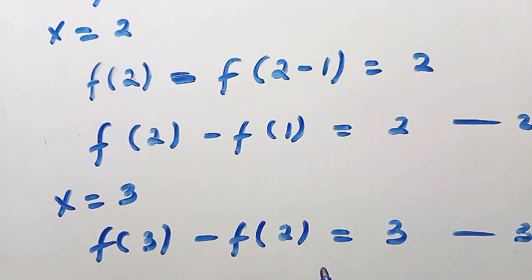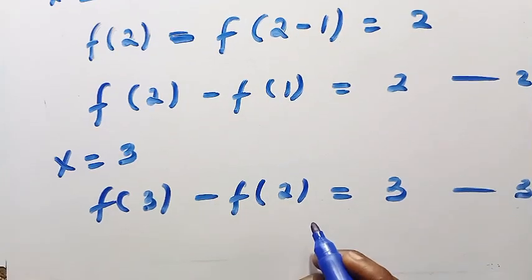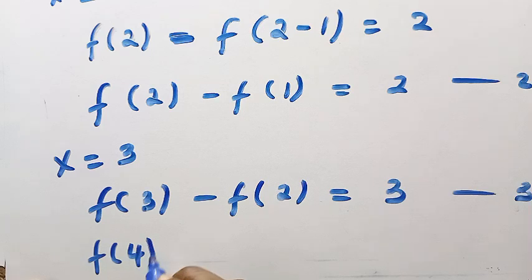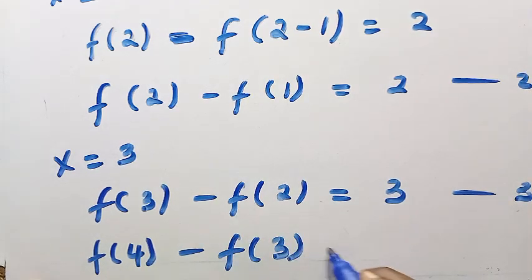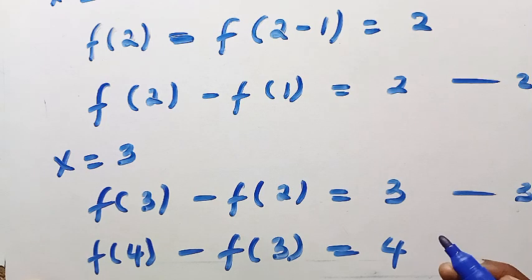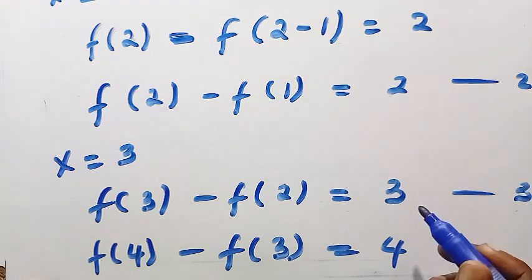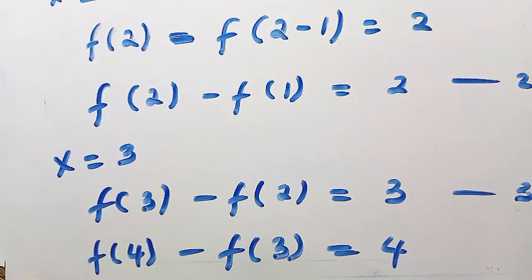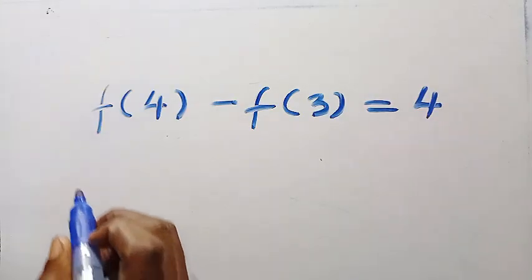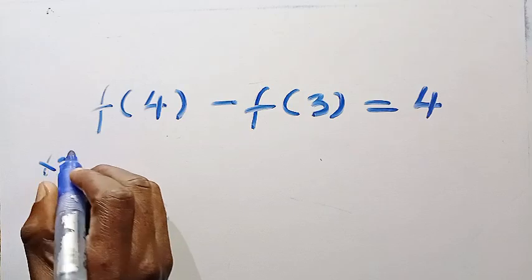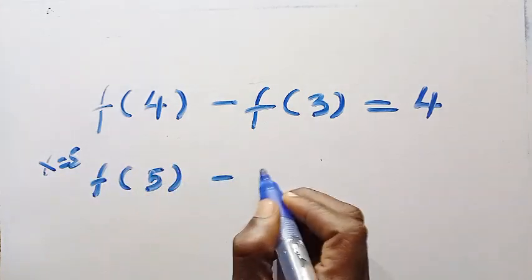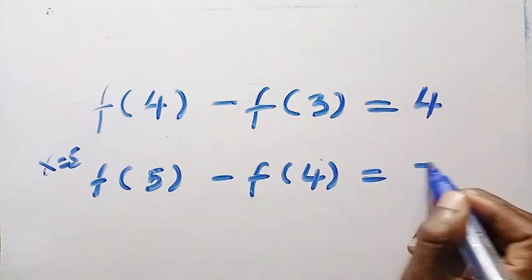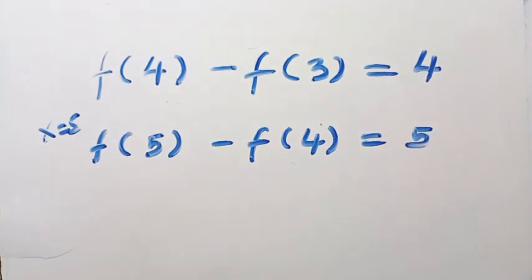And this is how this continues. If we test for x = 4, the next thing we're going to be having here is f(4) - f(3) = 4. And if you look at the right-hand side, this follows a series from 1 to 2, from 2 to 3, and from 3 to 4. If we set x = 5, we are going to have f(5) - f(4) = 5.